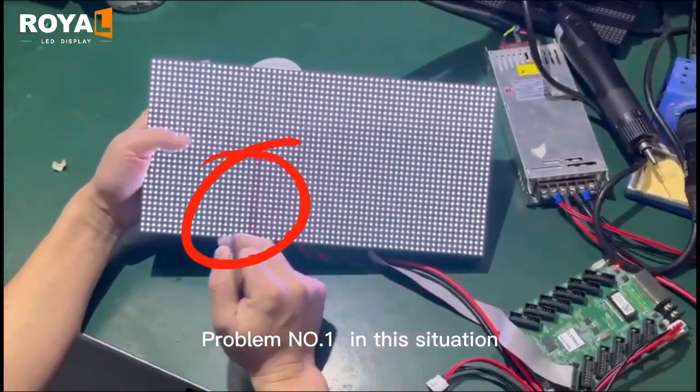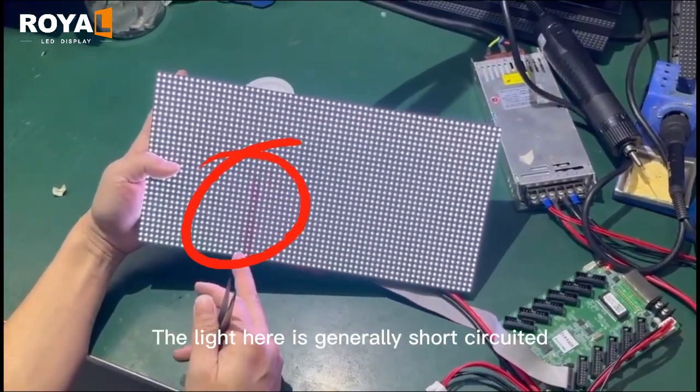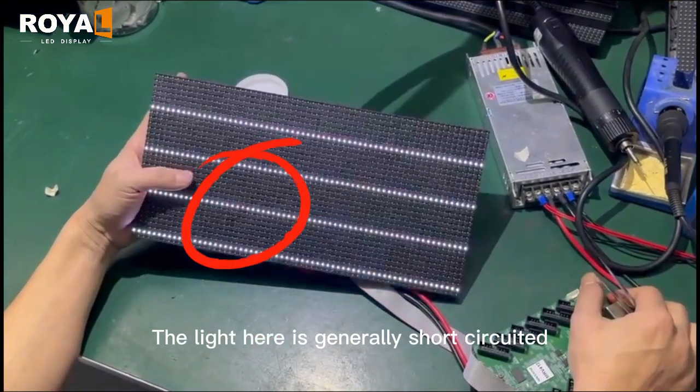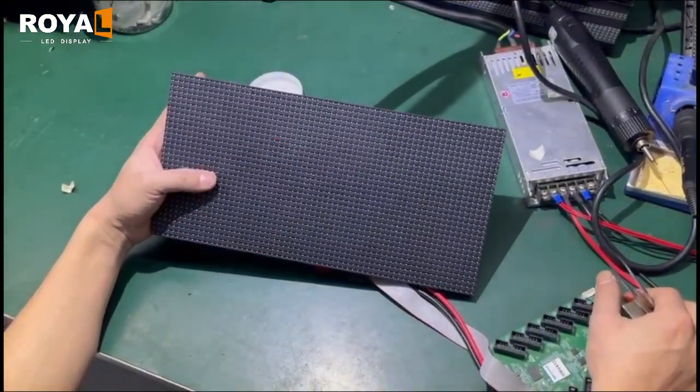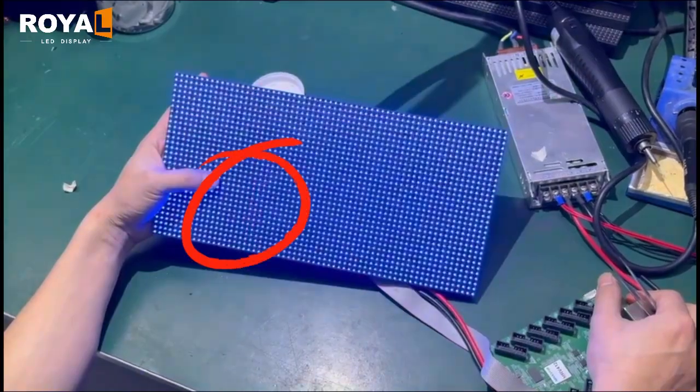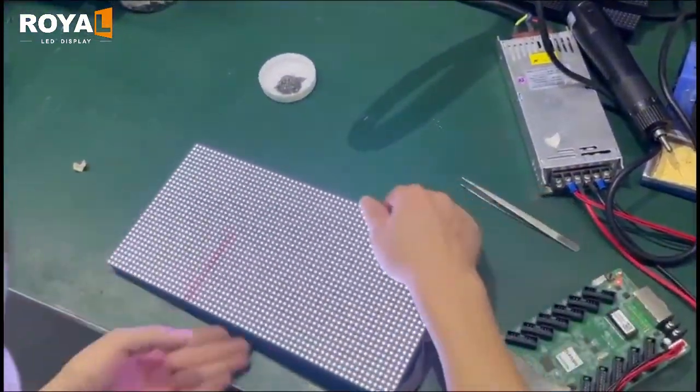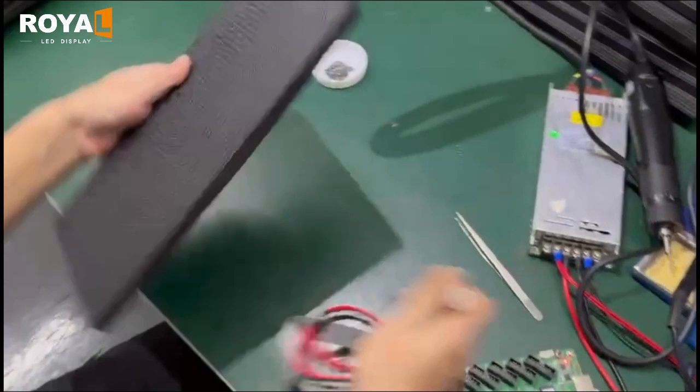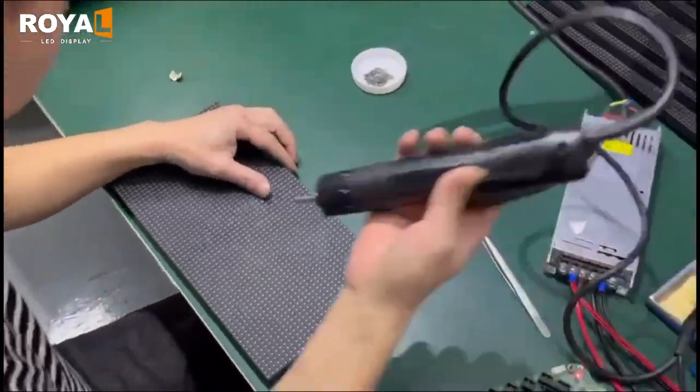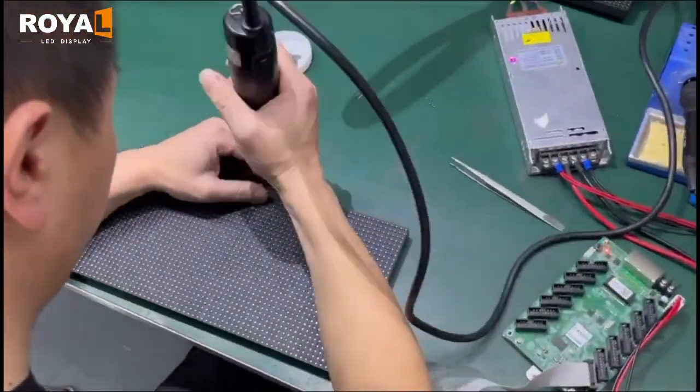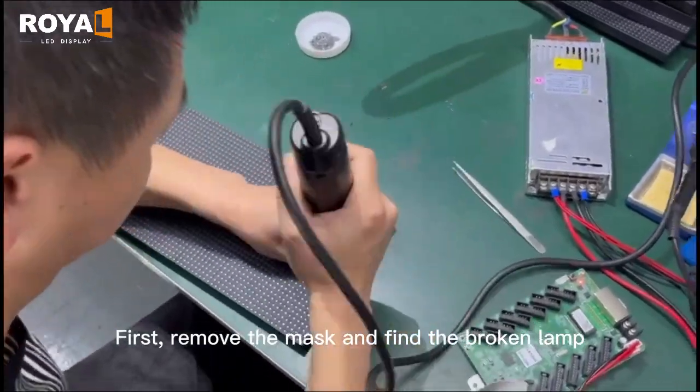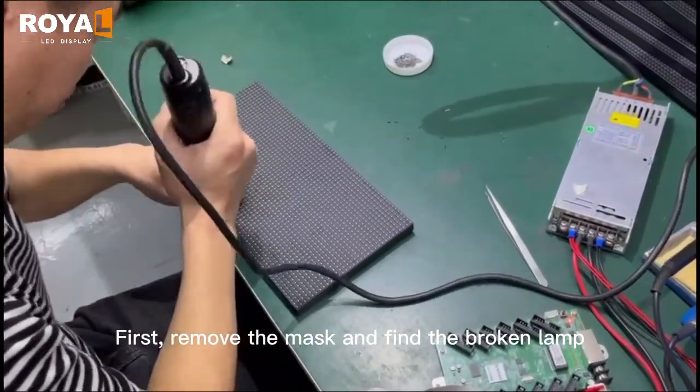Problem number one: In this situation, the light here is generally short circuited. First, remove the mask and find the broken lamp.